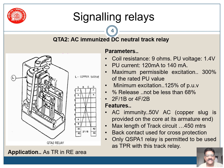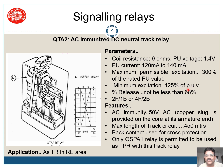Next we have the QTA2 relay. This relay is an AC immunized DC neutral track relay. Its basic parameters: coil resistance is 9 ohms, pickup voltage is 1.4 volts, and current rating is between 120 milliamps to 140 milliamps depending upon various factors. Maximum permissible excitation is 300 percent of rated pickup value, which gives up to 4.2 volts. Minimum excitation is 125 percent of rated pickup value, which comes to 1.75 volts. So the relay voltage should be between 1.75 to 4.2 volts for correct and proper operation. The drop-away percentage shall not be less than 68 percent.